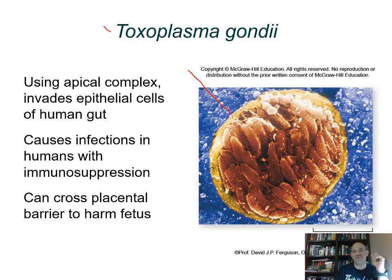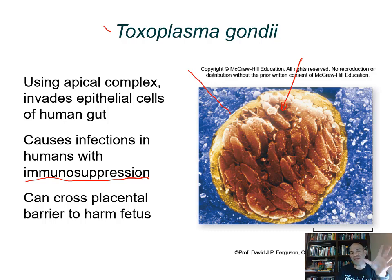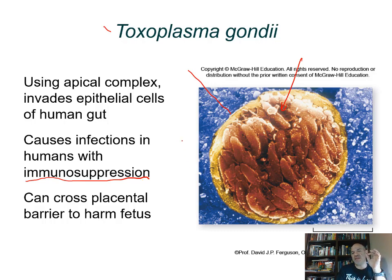Moving on to the ciliates, they get their name because they have cilia. The phylum they belong to is Ciliophora — 'cilia' plus 'forese' meaning 'to carry.' A common representative you should know is Paramecium; others seen in lab include Stentor. The little cilia beat in a coordinated fashion and allow them to move around. They have an extracellular structure — not hard like a cell wall — called a pellicle, a flexible protein coating.